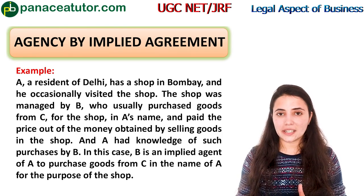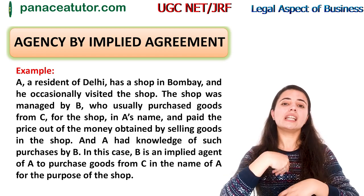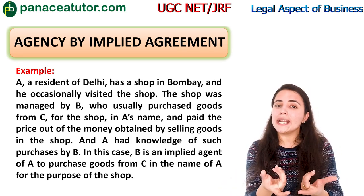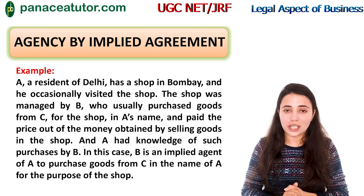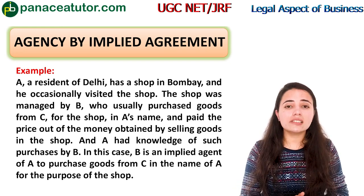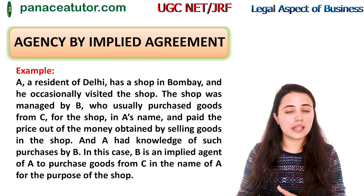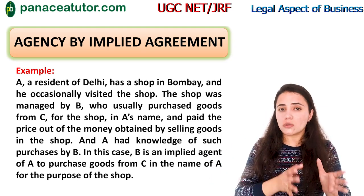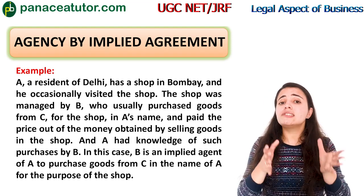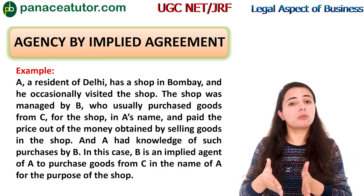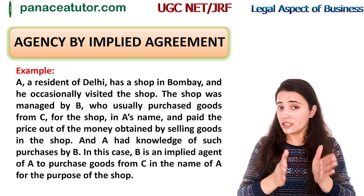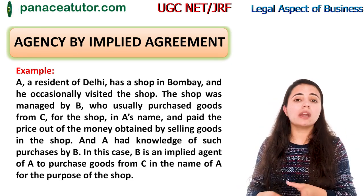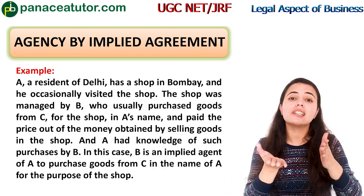The next is agency by implied agreement. Implied agreement means that a situation automatically creates an implication that an agency exists — it is obvious from the circumstances. For example, A is living in Delhi but owns a shop located in Bombay. B is managing A's shop in Bombay, and C is a regular customer. In this case, it is implied that B is the agent of A, acting on A's behalf. B is not the owner of the shop — the owner is in Delhi — but B can deal with C and others on A's behalf. So the agency is also created by implication.